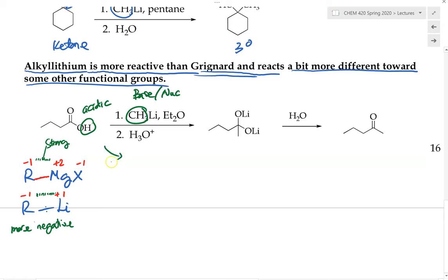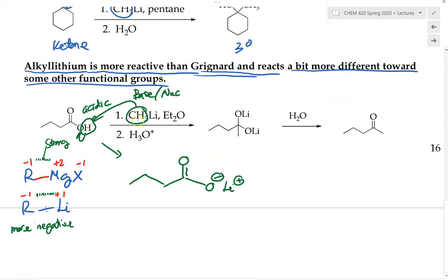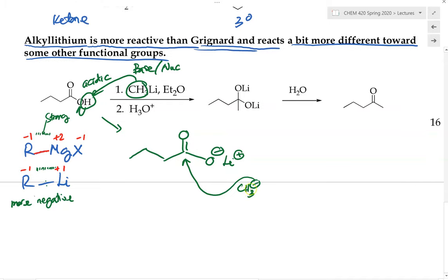The first equivalent will undergo an acid-base reaction first. The alkyl lithium comes in, picks up the acidic proton, and gives an electron to the oxygen, producing the carboxylate, with one lithium binding to the oxygen as the counter ion. Now, if there is excess reagent, the excess can come in and add to the carbonyl carbon. This is very different from the Grignard reagent — with Grignard, the carbanion would not be able to attack this carbonyl carbon, but with the alkyl lithium reagent, it can.